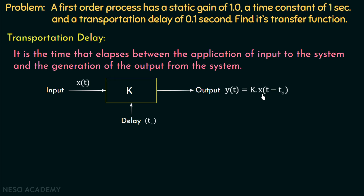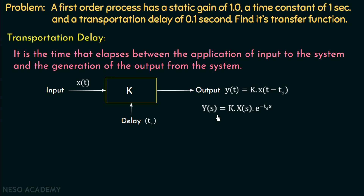We can write the output y(t) = k · x(t − td): the system gain is multiplied with the input and it is generated after td seconds. Taking the Laplace transform, by the time shifting property, Y(s) = k · X(s) · e^(−td·s). Shifting in the time domain corresponds to multiplication by an exponential in the frequency domain. Transposing X(s) to the left, the transfer function Y(s)/X(s) = k · e^(−td·s).